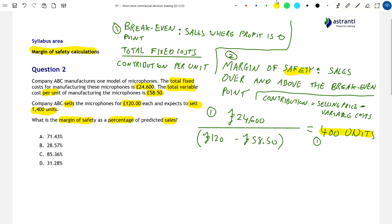So remember, the margin of safety is the sales over and above the break even point. And if we look to the question, it tells us that company ABC expects to sell 1,400 units, 1,400 microphones. So if we take this figure of 1,400, subtract the break even point that we just calculated of 400 units, we see that we have a margin of safety of 1,000 units. Company ABC expects to sell 1,000 units over and above its break even point.